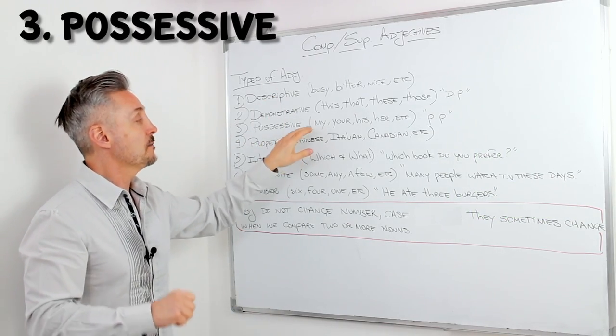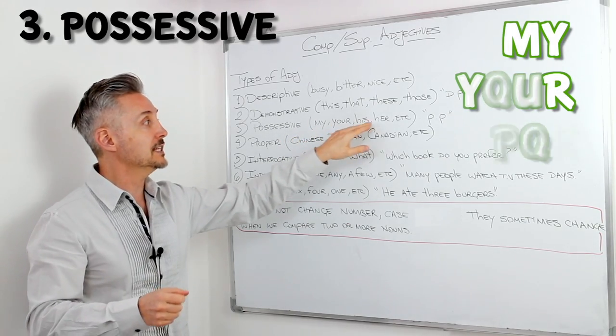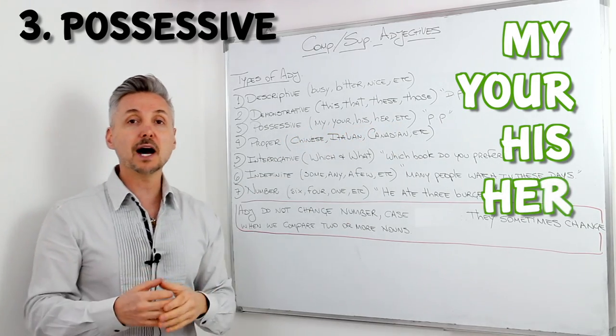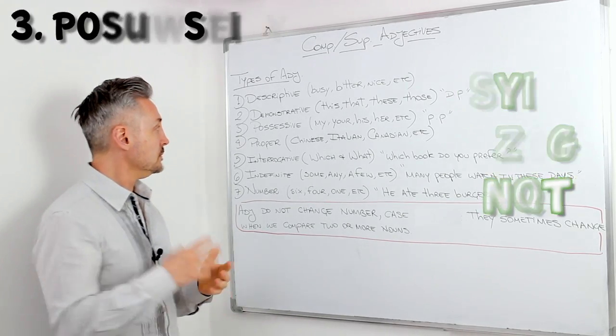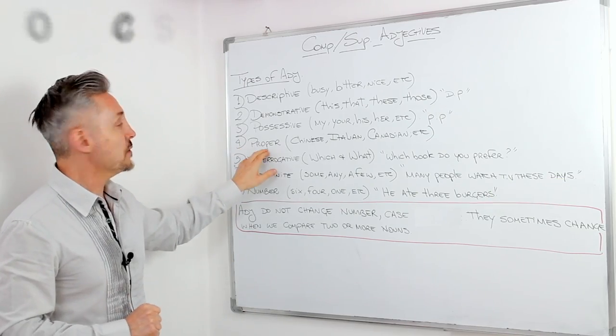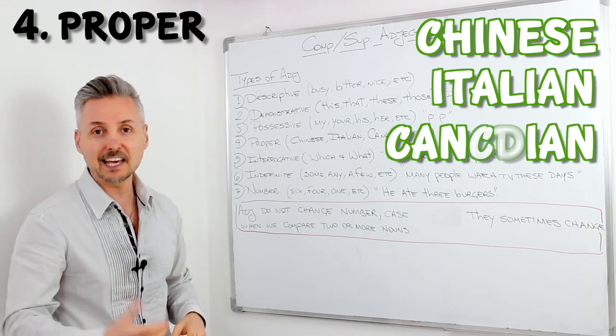Possessive adjectives, much like the possessive pronouns. My, your, his, her, etc. My wife likes English a lot, for example. Then proper adjectives, Chinese, Italian, Canadian, etc.